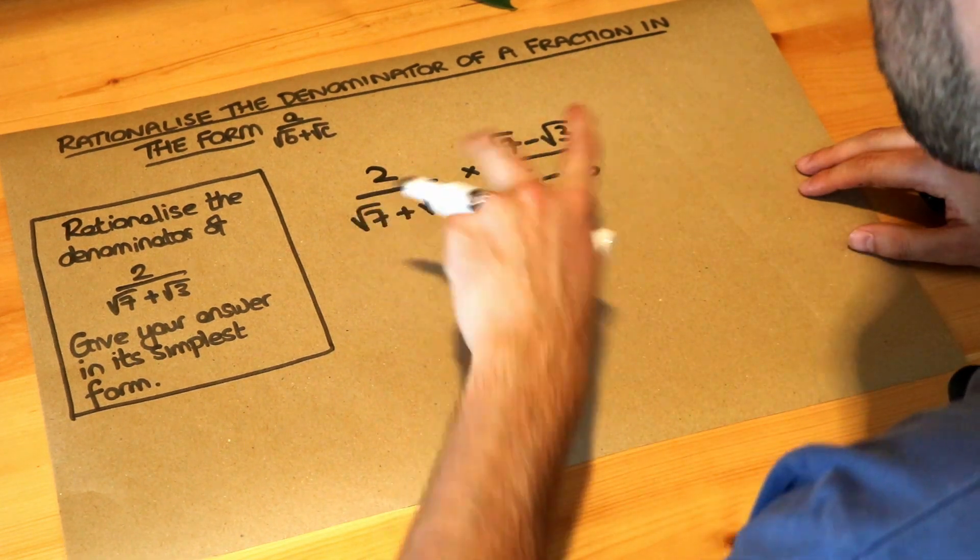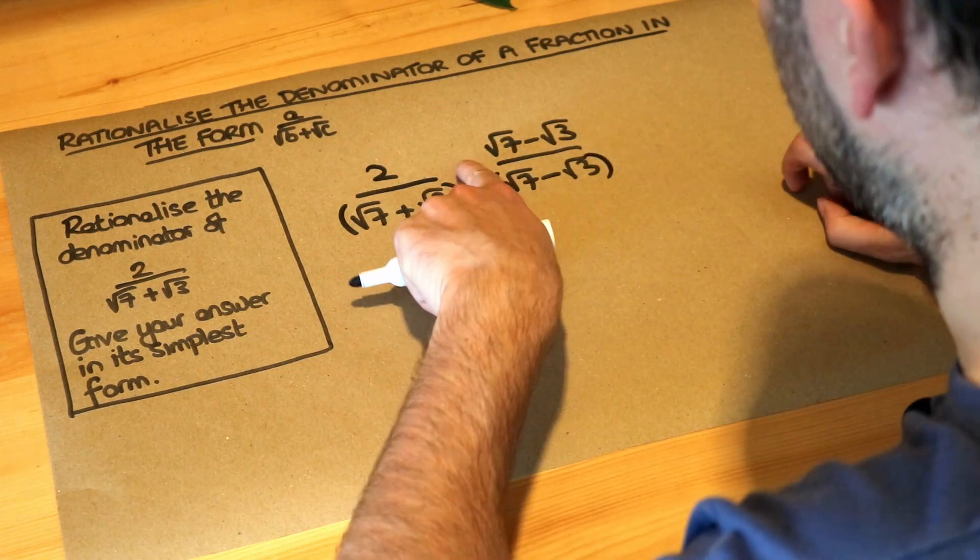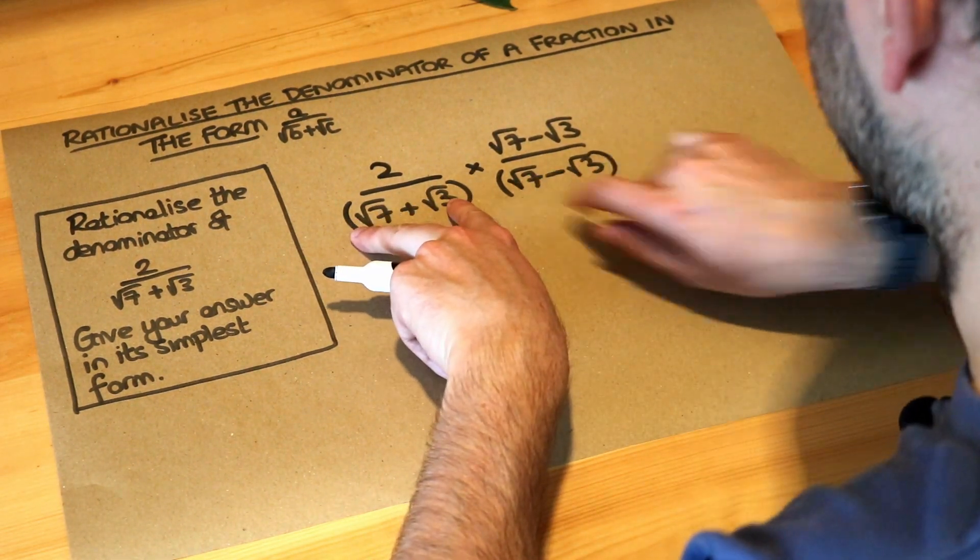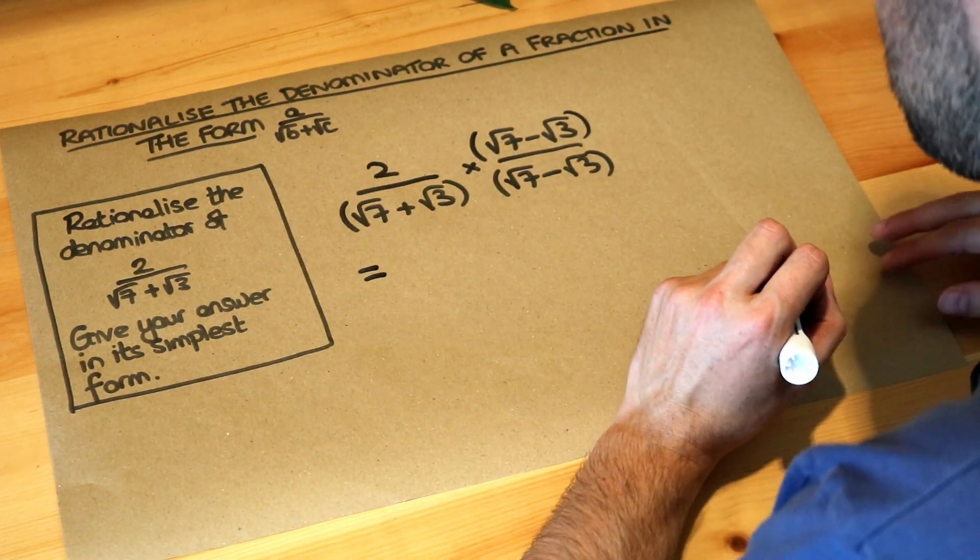Now because we're multiplying two whole expressions together, I'm just going to put it in brackets for clarity, because then we can see when we multiply these denominators together, you need to expand these two brackets. I'm going to do the same here, just put a bracket around it. So now we just need to simplify by expanding.